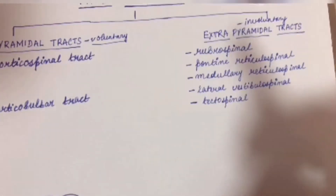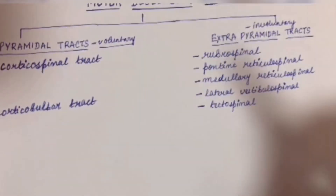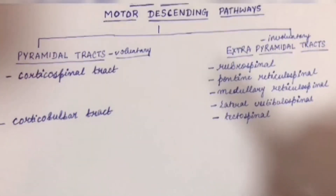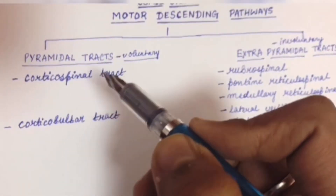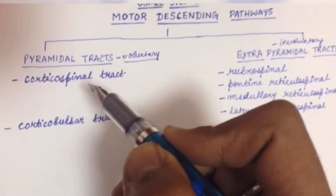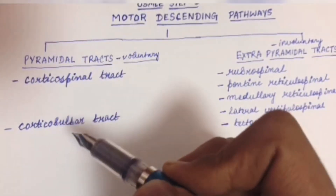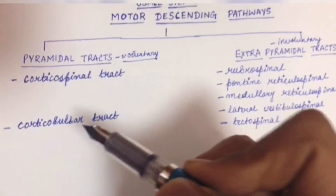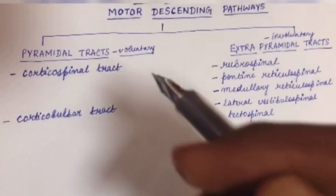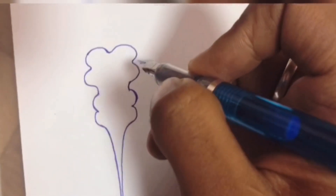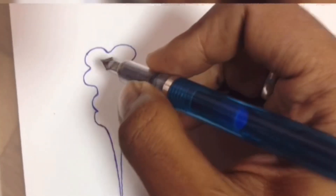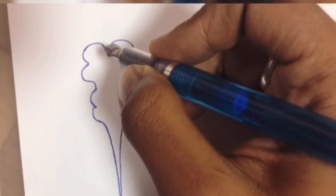Involuntary movements include reflexes, posture movements, and other types of movements. The main tracts in the pyramidal system are the corticospinal tract and the corticobulbar tract. The corticospinal tract starts from the cerebral cortex.